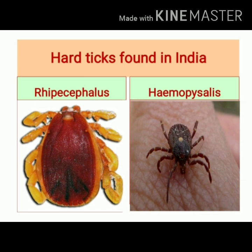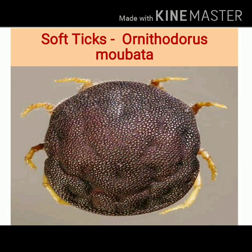These are other important hard ticks we can find in India. The first one is Rhipicephalus, and the second image shows Haemaphysalis. This is an image of a soft tick, known as Ornithodoros maubata.